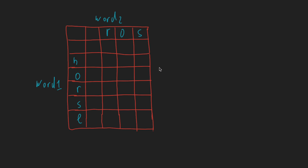We are going to use a dynamic programming bottom-up approach to solve this problem. The bottom-up approach is when we solve sub-problems that build up to our solution. To track the sub-problems we've already solved, we create a two-dimensional array where we store results from previous sub-problems.